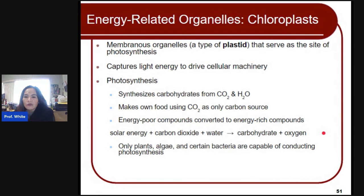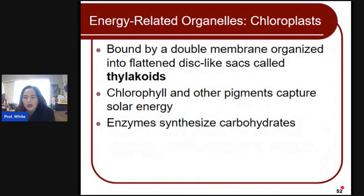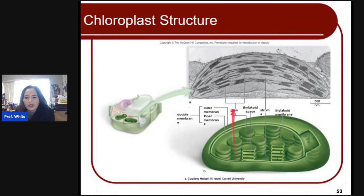The chloroplast synthesizes carbohydrates from carbon dioxide and water, making plants capable of making their own food using carbon dioxide as the only carbon source. Energy-poor compounds are converted to energy-rich compounds. Together with solar energy, carbon dioxide, and water, plants produce carbohydrates or sugar plus oxygen. Only plants, algae, and certain bacteria are capable of conducting photosynthesis. Chloroplast is bound by a double membrane organized into flattened disc-like sacs called thylakoids, where chlorophyll and other pigments capture solar energy and enzymes synthesize carbohydrates.